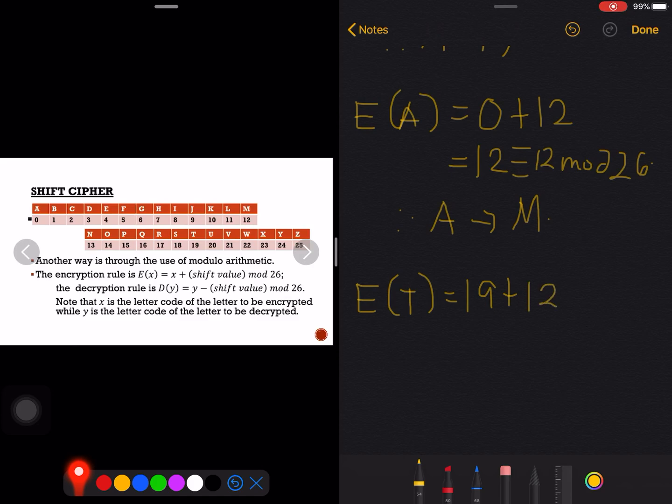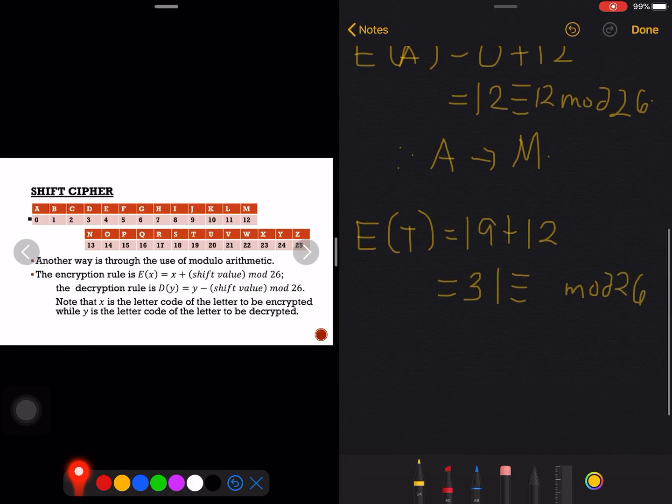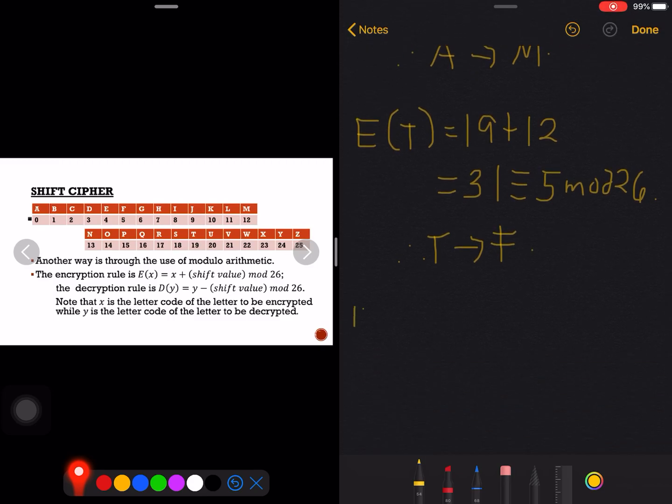Next letter to encrypt would be T. T has a letter code of 19, then plus the shift key which is 12, that would be 31. Now 31 modulo 26, I hope you can still remember how to do that, that would be five.